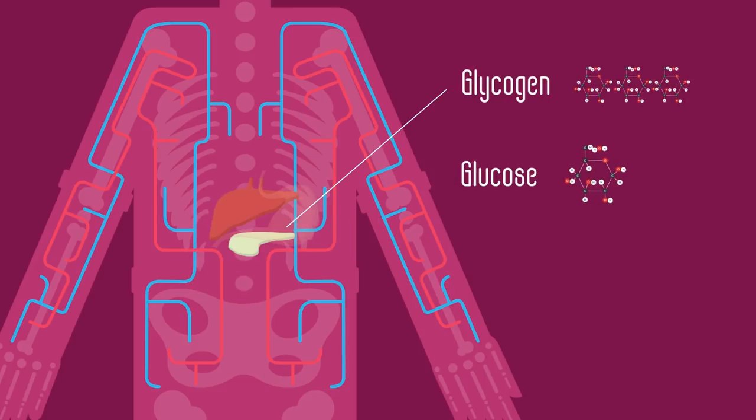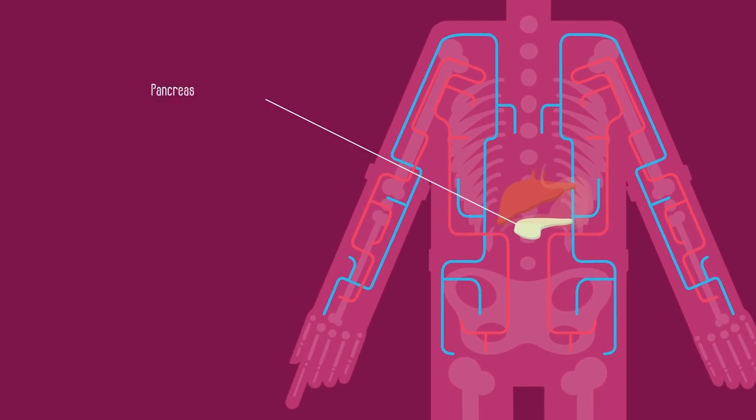This increases your blood glucose level back to its optimal state. So to review: insulin and glucagon are two hormones released by the pancreas which act on the liver to regulate our blood glucose level.